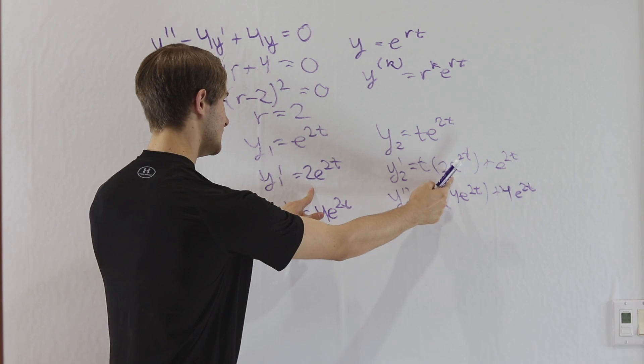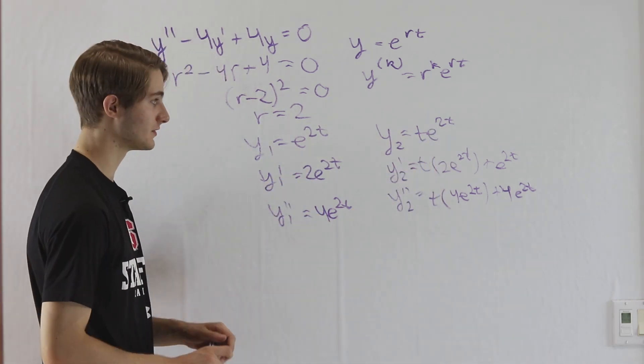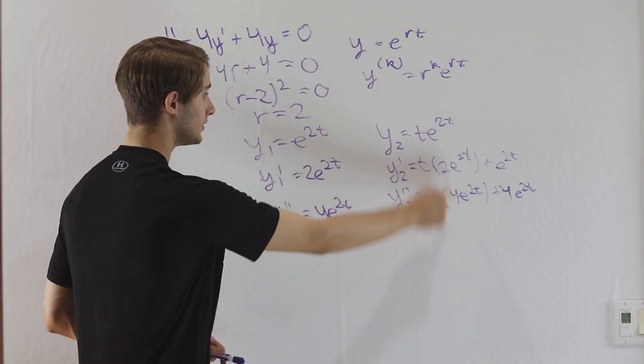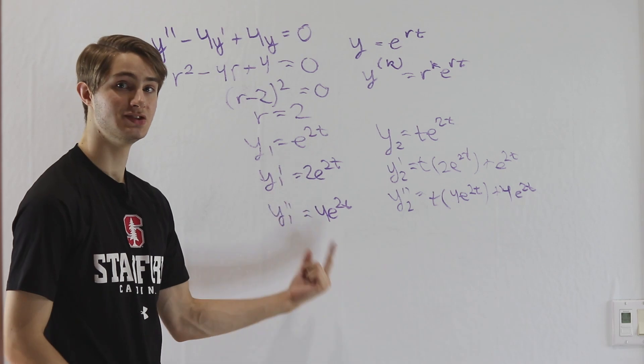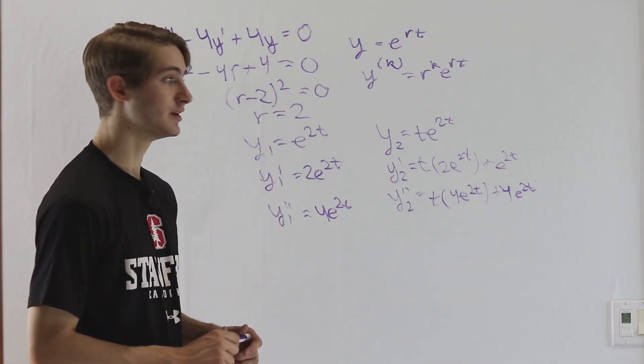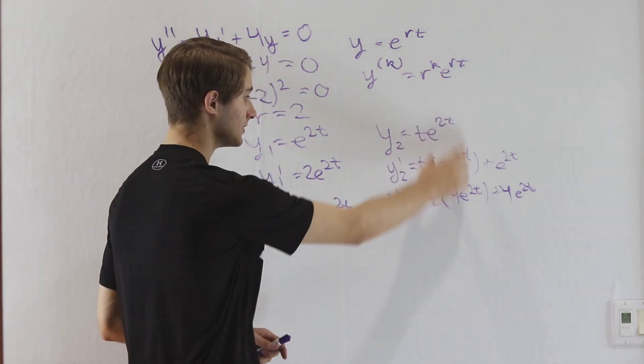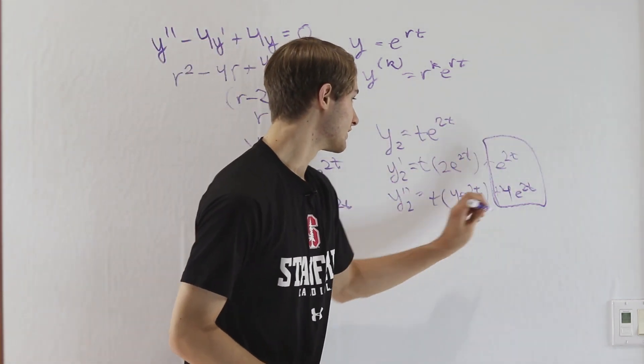All of these things in here match up with the derivatives of the original function, our first solution. And therefore, we know that if we plug all of these into the differential equation, we're going to get t times something that we know adds to zero since it's a solution. And zero times t equals zero as well, which means that we are able to completely ignore this first part. We can just focus on this over here.